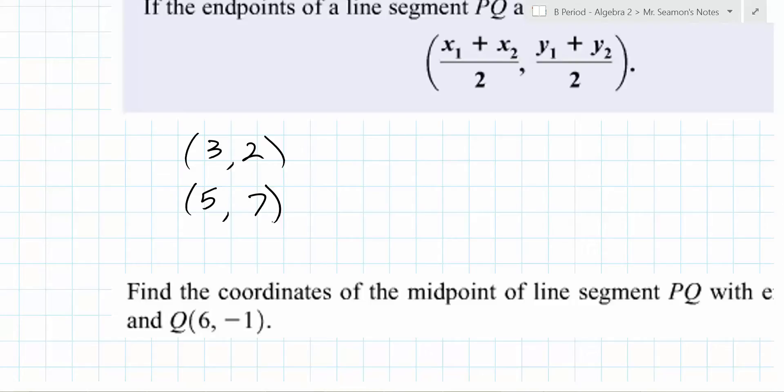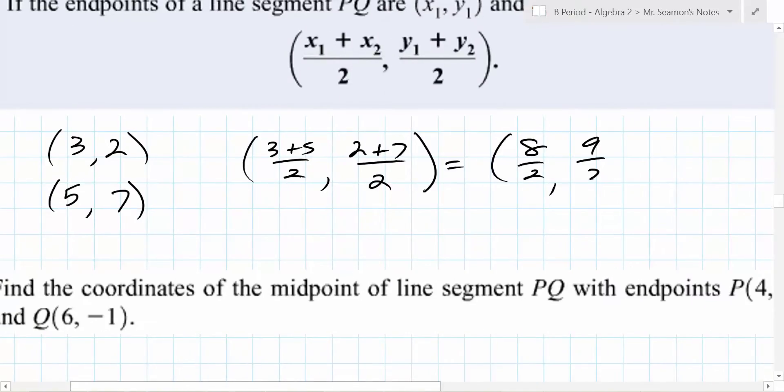So, can we find a midpoint between them? You add together the x values. What are the x values? 3 plus 5 divided by 2, comma? 2 plus 7. 2 plus 7 divided by? 2. 2. Simplify a little bit. You end up with? 8 over 2 and? 9 over 2. 9 over 2. Close. So, 4, comma, 9 over 2. There's your midpoint.